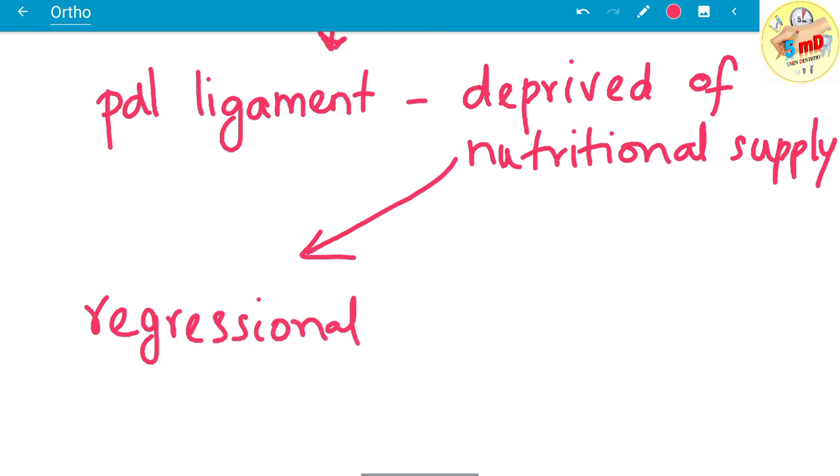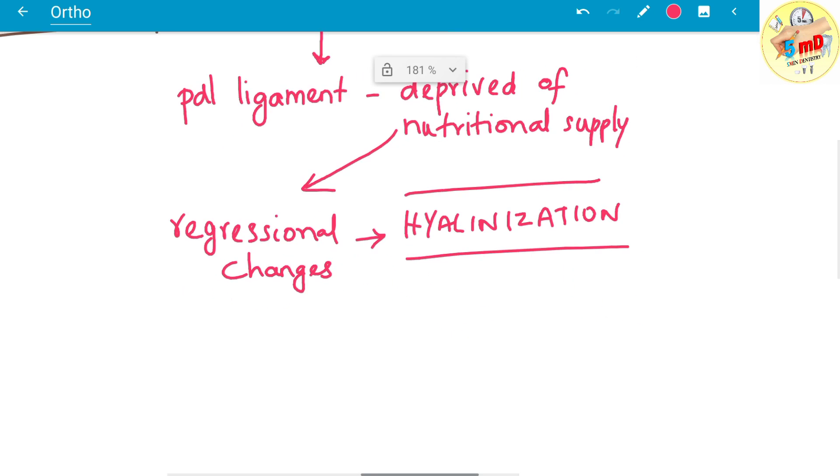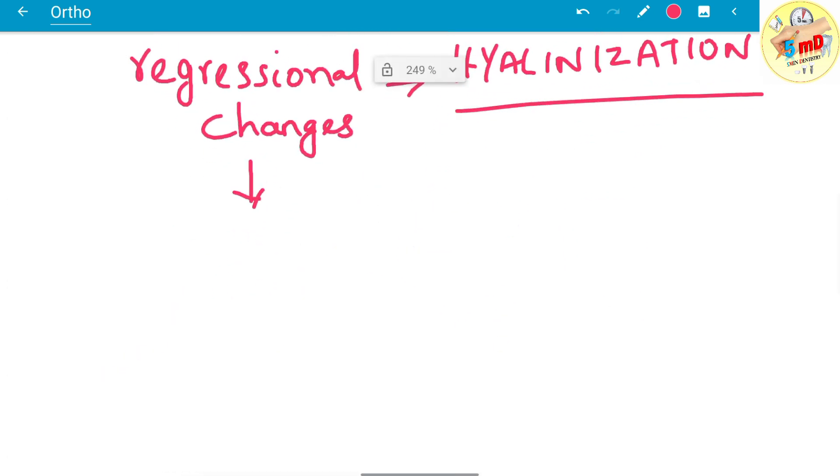Regressive changes seen in the periodontal ligament lead to the histological tissue known as hyalinization—hyalinized tissue. The process of hyalinization leads to lack of bone resorption, which needs to be there for the tooth to move in the socket.